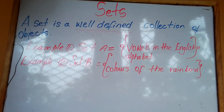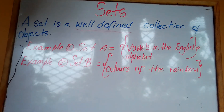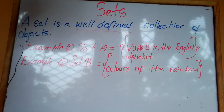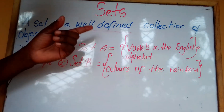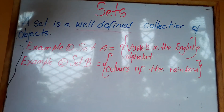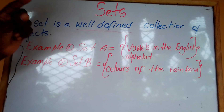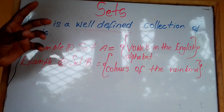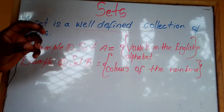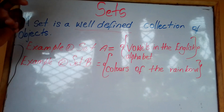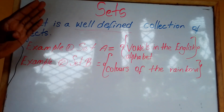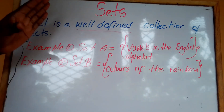Set A contains the vowels in the English alphabet. This is well-defined because we know that in the English alphabet there are five vowels, therefore this set is very clear.